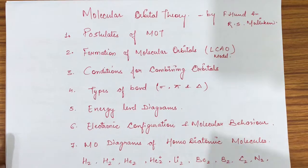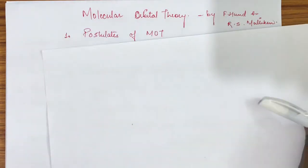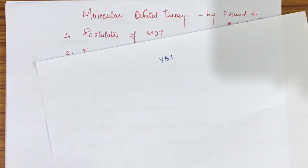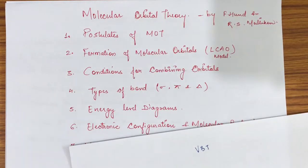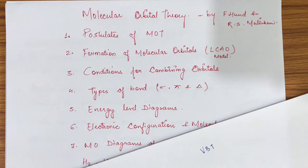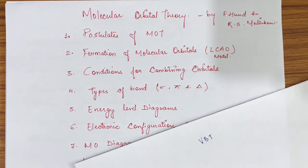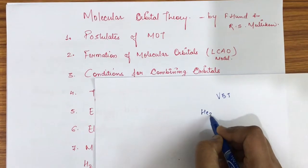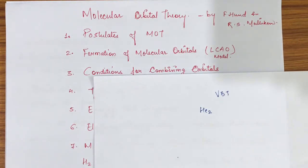We have learned many theories before MOT — if I talk about the valence bond theory and the crystal field theory, there are many theories we have already learnt. But why do we need to learn MOT? The valence bond theory doesn't answer certain questions. For example, if I ask you why the He₂ molecule does not exist, that answer is not clearly explained by the valence bond theory.